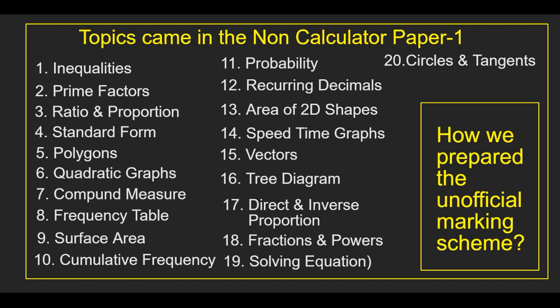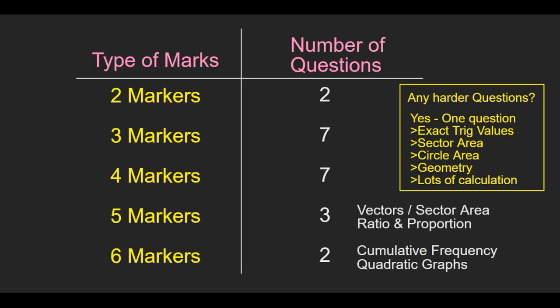We imagine the exam paper with 21 questions in this type, predict the answers ourselves, and prepare and publish the unofficial marking scheme. The distribution of marking based on methods and working outs will vary compared to the actual marking scheme, but the question type is nearly the same. Maybe one or two, maximum five questions may be different, and the numbers may differ, but the type of question is pretty much the same.